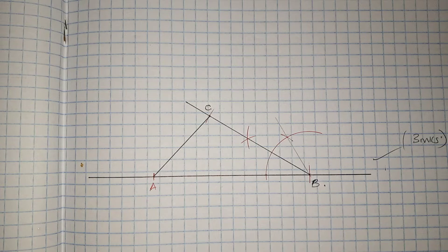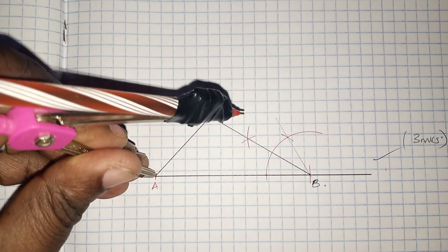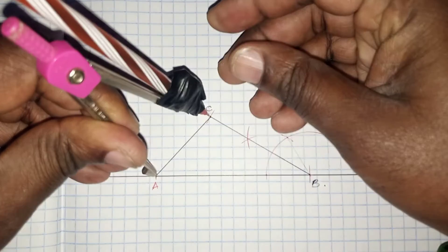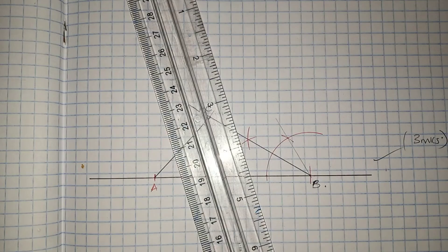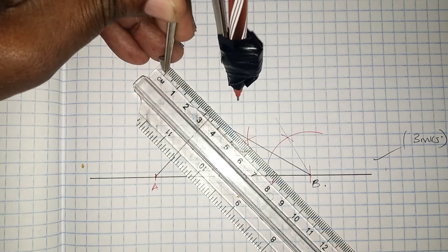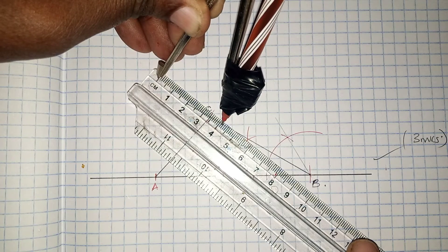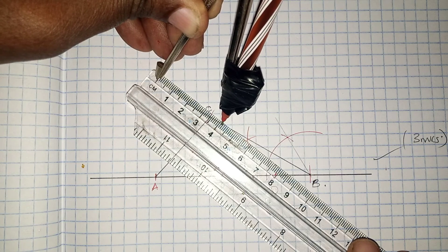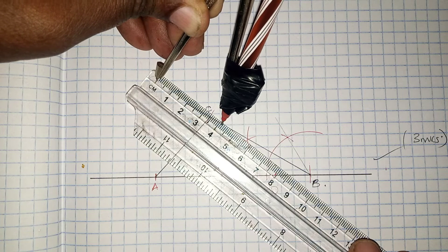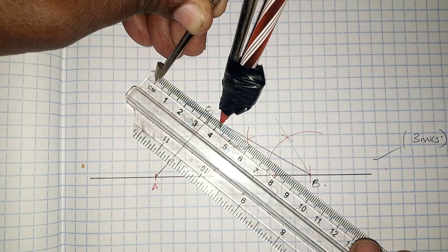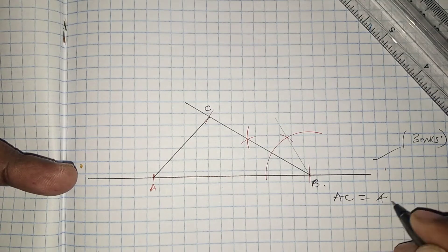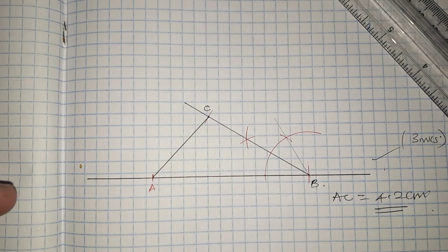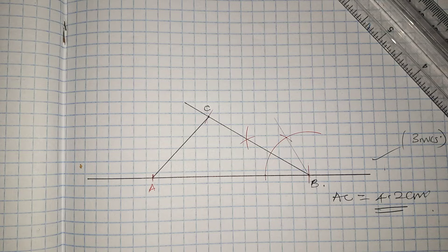Next, we are asked to measure AC. We place our compass on AC and transfer it to the ruler to get the exact measurement. AC is 4.2 cm — that is one mark.